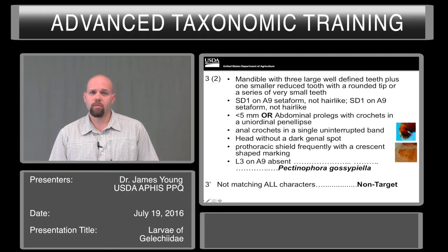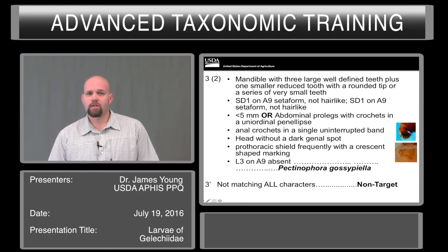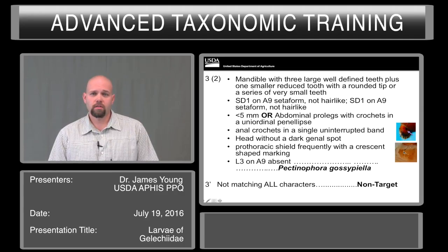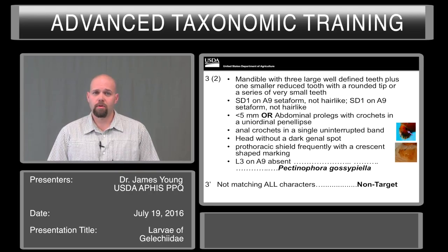The head without a dark genal spot. There are some specimens coming out of the Caribbean that have this spot. We are not sure if this is the same species or a closely aligned species we are unaware of at this time. Often there is also a crescent-shaped marking on the pronotum. This is not always present — it is essentially a muscle attachment point, and if the specimen has recently molted or is at a later stage in its development, this character may not be present.